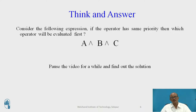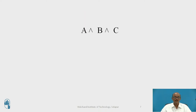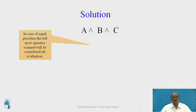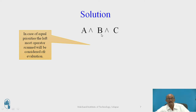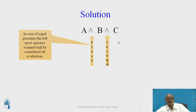Now consider the following expression: if operators have the same priority, which operator will be evaluated first? Take a pause and try to answer. Suppose the expression is a AND b AND c. In case of equal priorities, the leftmost operator is evaluated first. So the AND between a and b is evaluated first, then the AND between the result and c is evaluated next.